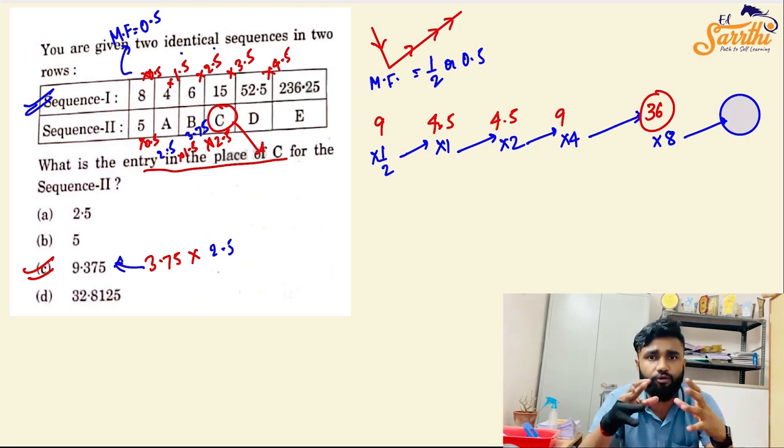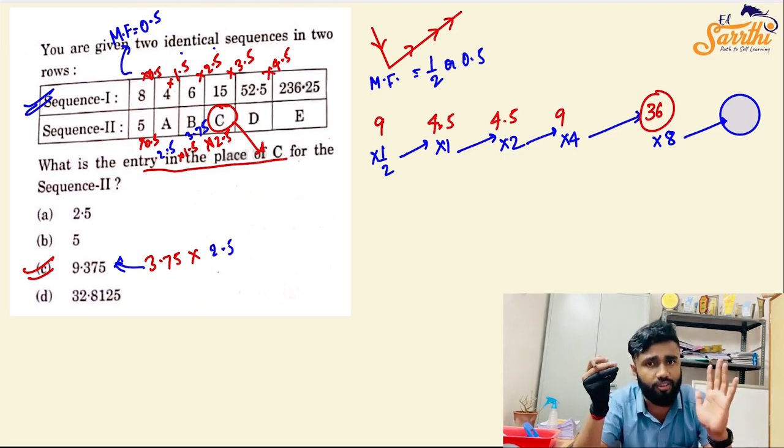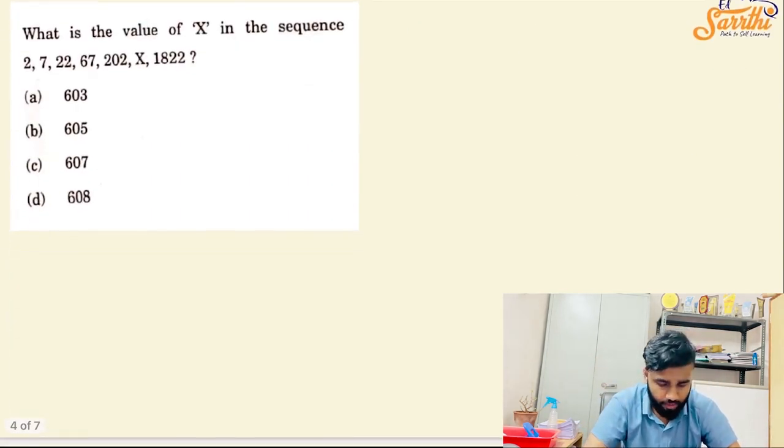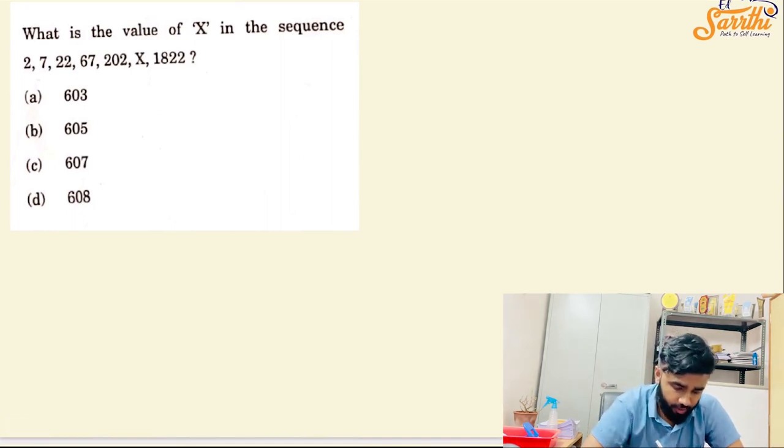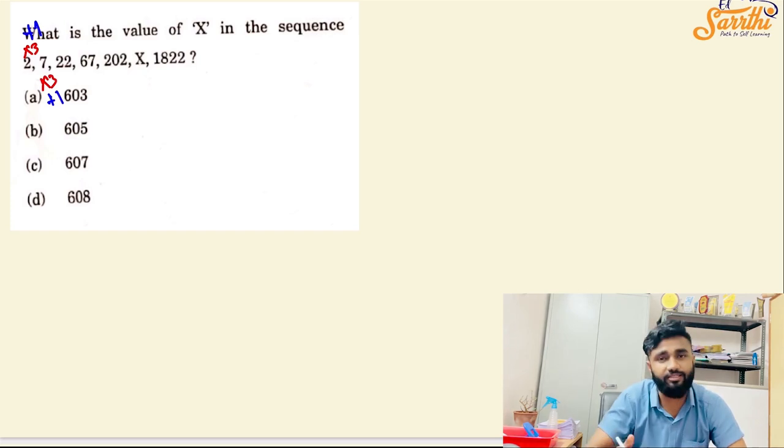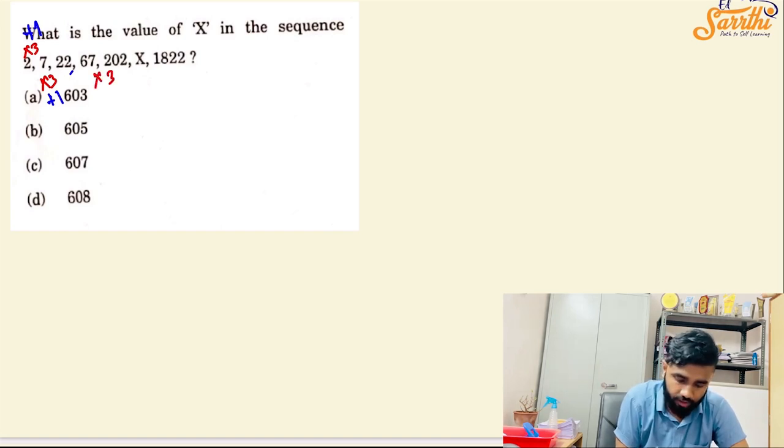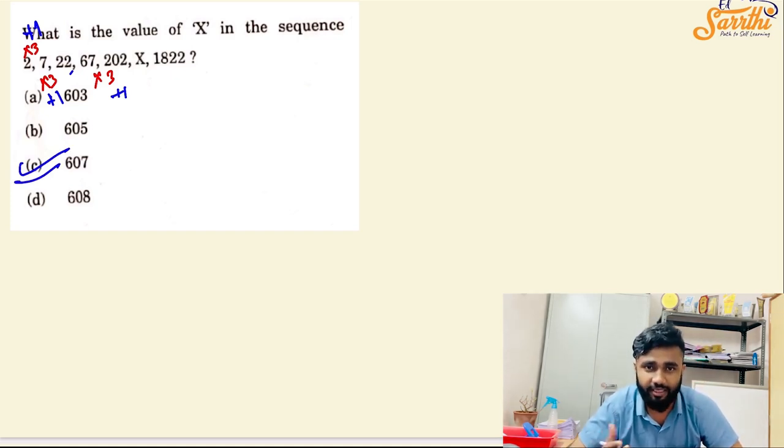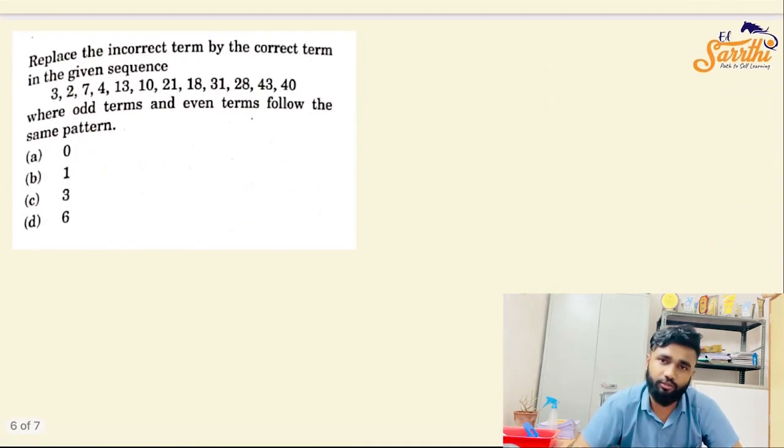What is the value of X? A missing term in the sequence. The numbers are 2.7, 22.67, 202. You can try yourself.